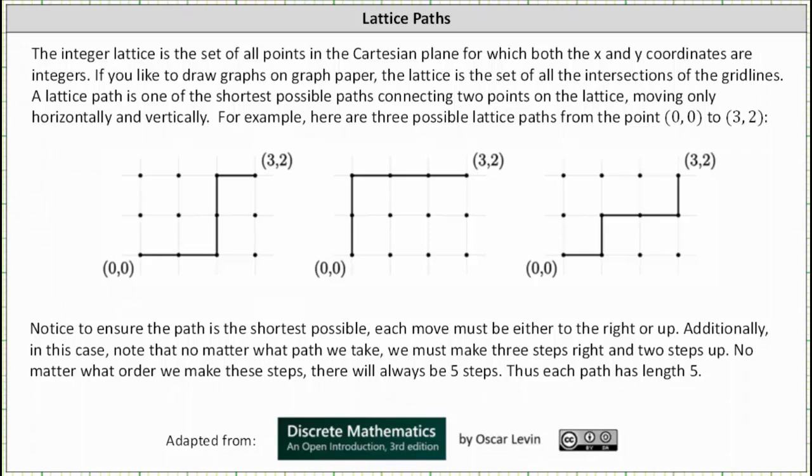Welcome to a lesson on lattice paths. The integer lattice is the set of all points in the Cartesian plane for which both the x and y coordinates are integers. If you'd like to draw graphs on graph paper, the lattice is the set of all the intersections of the grid lines.